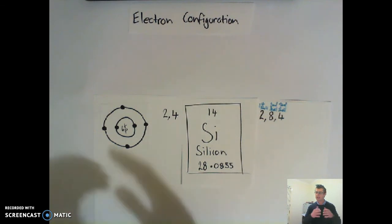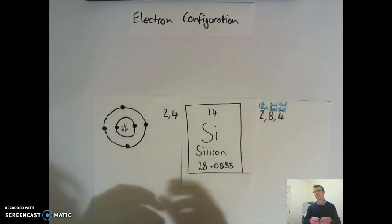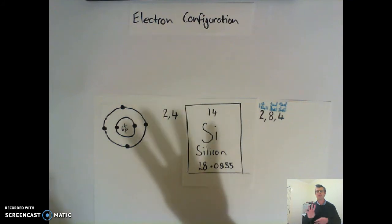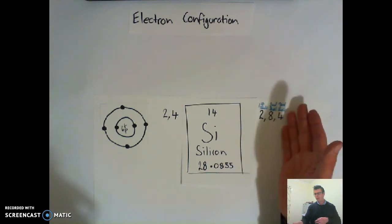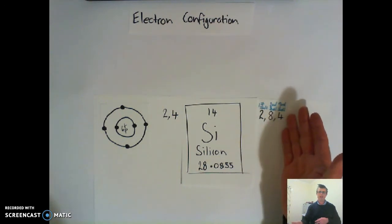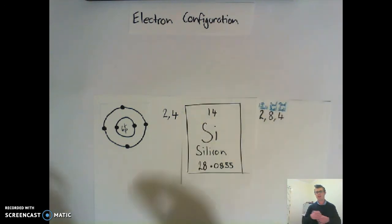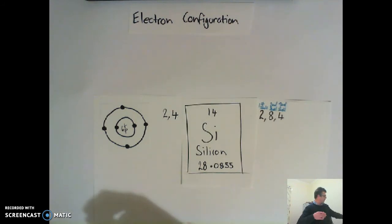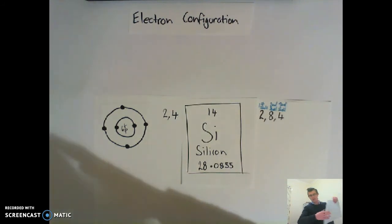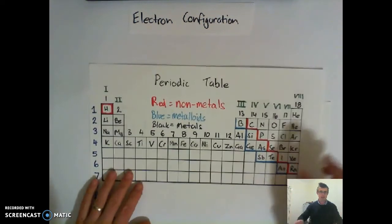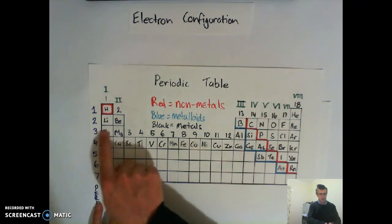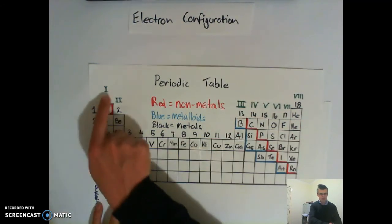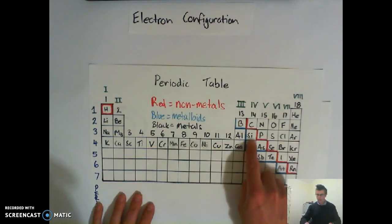Any element in group four has four electrons in its outer shell. Silicon has four in its outer shell, which means it must be in group four. Let's bring the periodic table up. If I find silicon — SI — we're in period three, and counting across: 1, 2, 3, 4 — group four. Where those two cross, that's where silicon is.